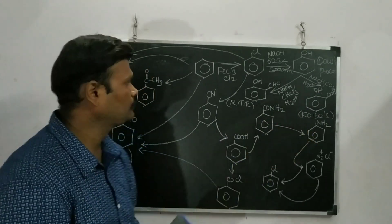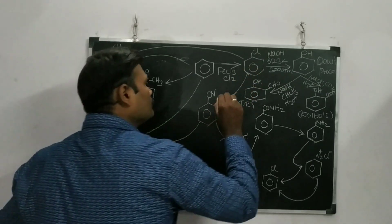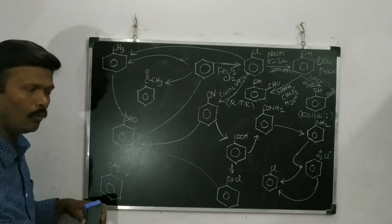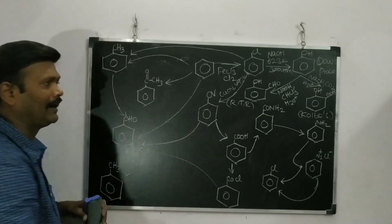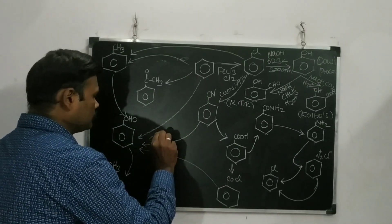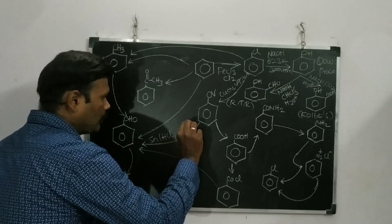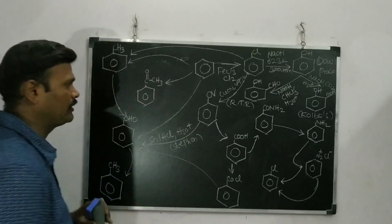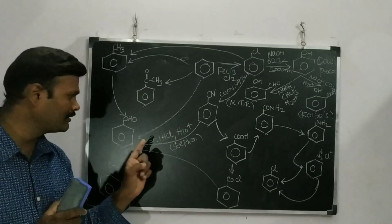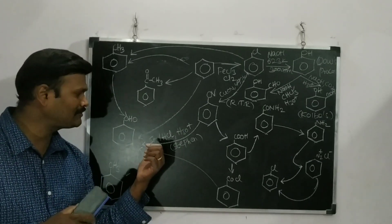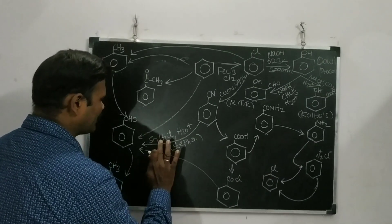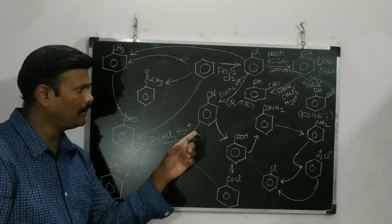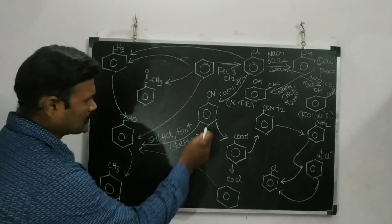From chlorobenzene to cyanobenzene, we use CuCN at 473 K. Once cyanobenzene is obtained, it can be converted to benzaldehyde using SnCl2 and HCl followed by hydrolysis. This reaction is called the Stephen reaction — Stephen reduction — converting a cyanide group to an aldehyde group using stannous chloride (SnCl2/HCl) followed by hydrolysis.